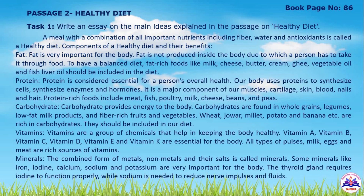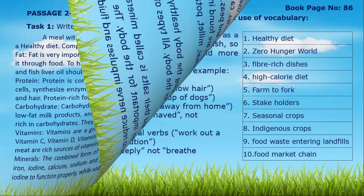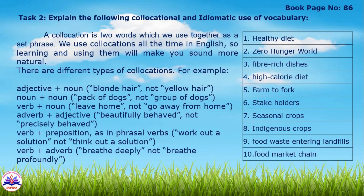A healthy diet includes fats, proteins, carbohydrates, vitamins, and minerals – everything balanced. We can consume and follow a healthy diet using this passage. Task 2, page 86, explains collocational and idiomatic use of vocabulary with 10 vocabulary items. A collocation is when two words are combined and may also be called phrases. Types of collocations include: adjective plus noun, noun plus noun, verb and noun, adverb and adjective, and verb and adverb.